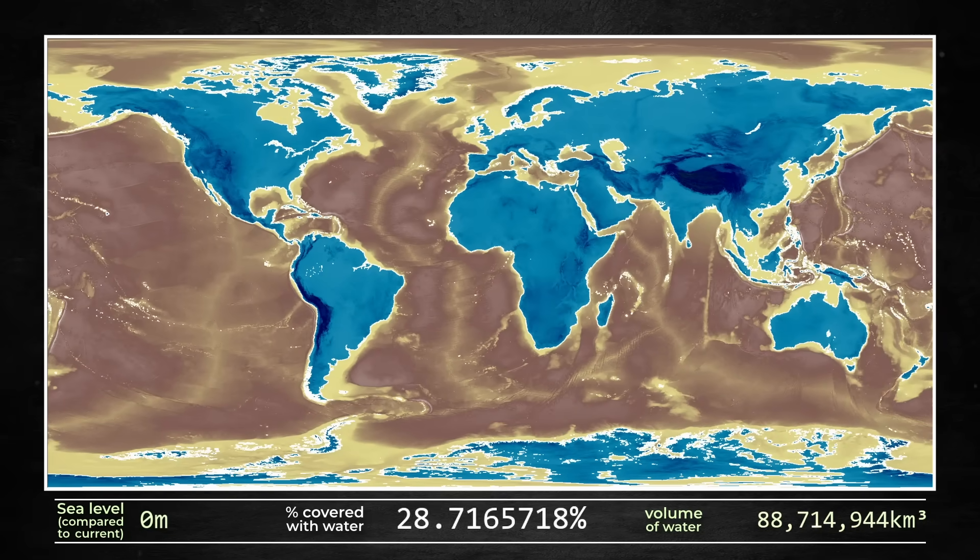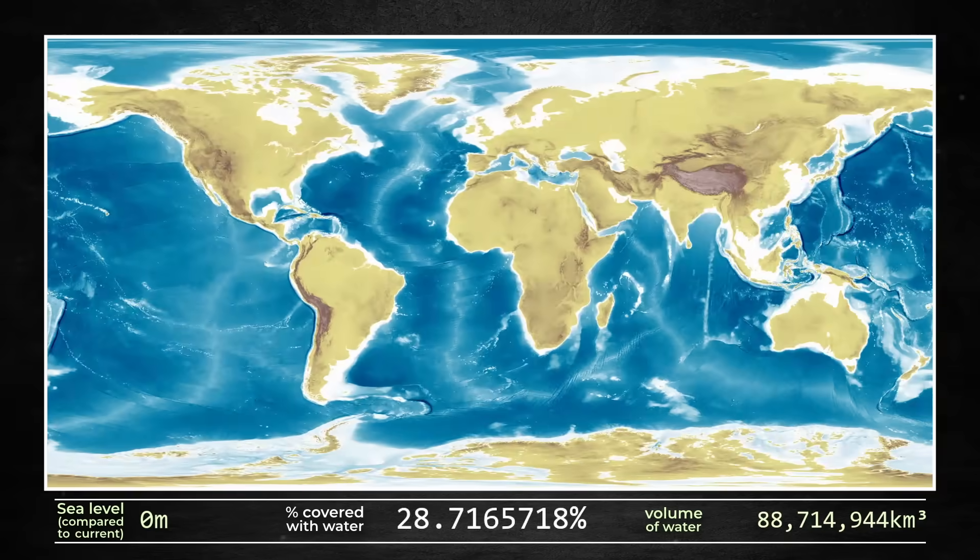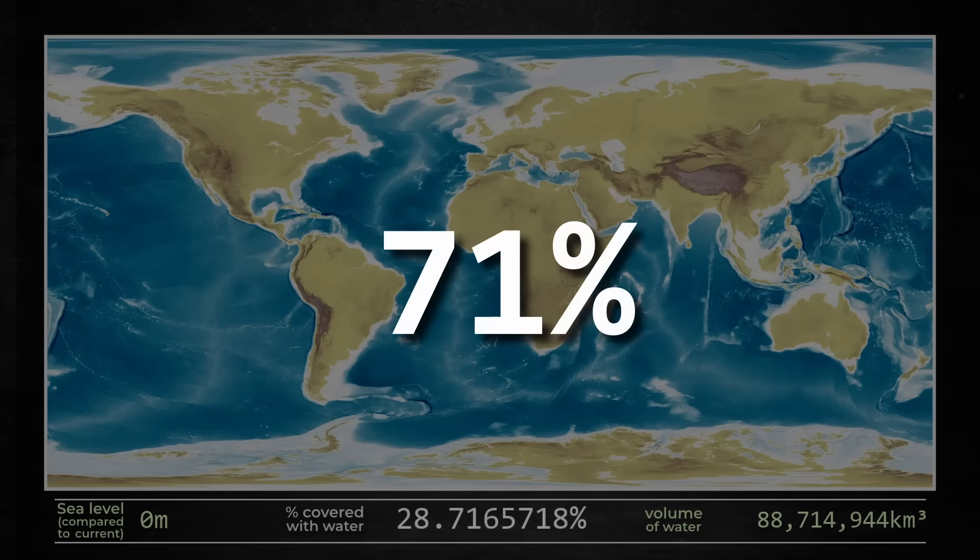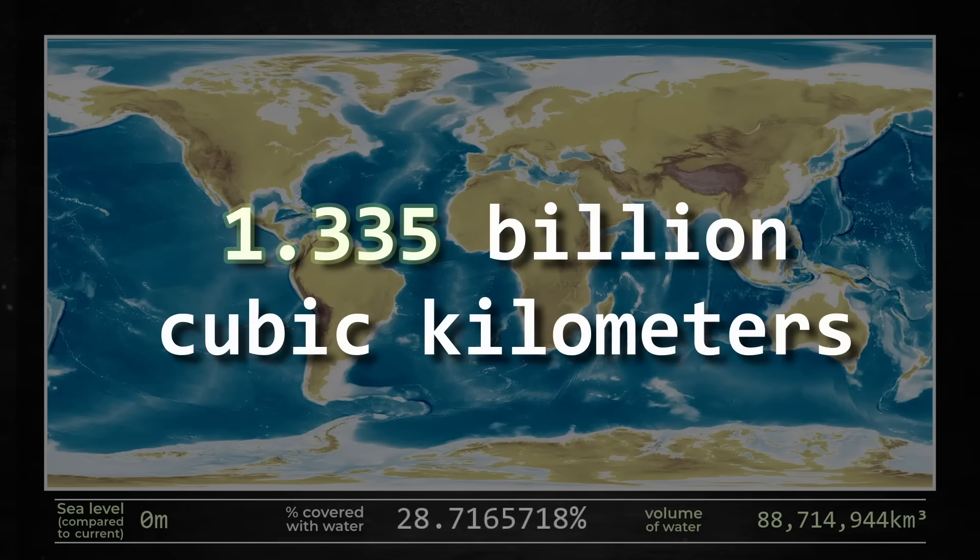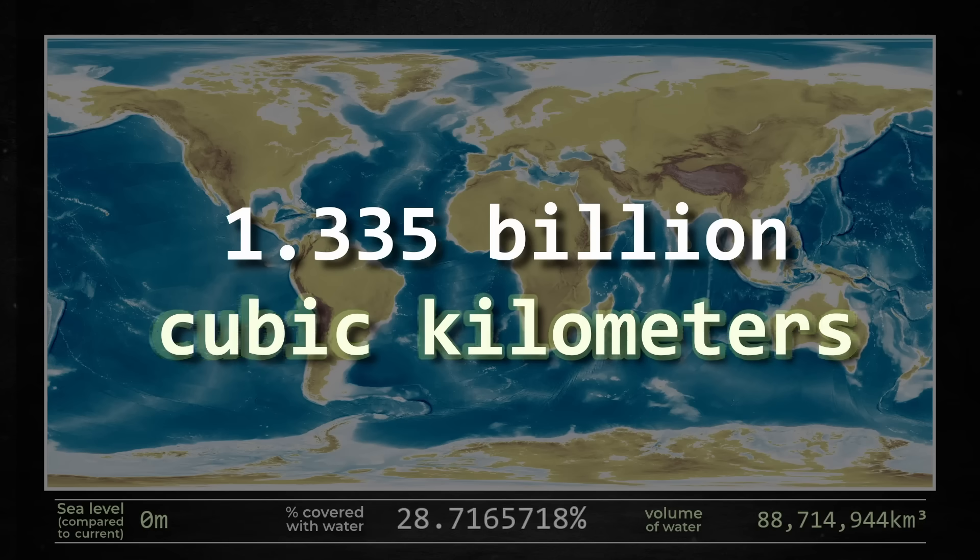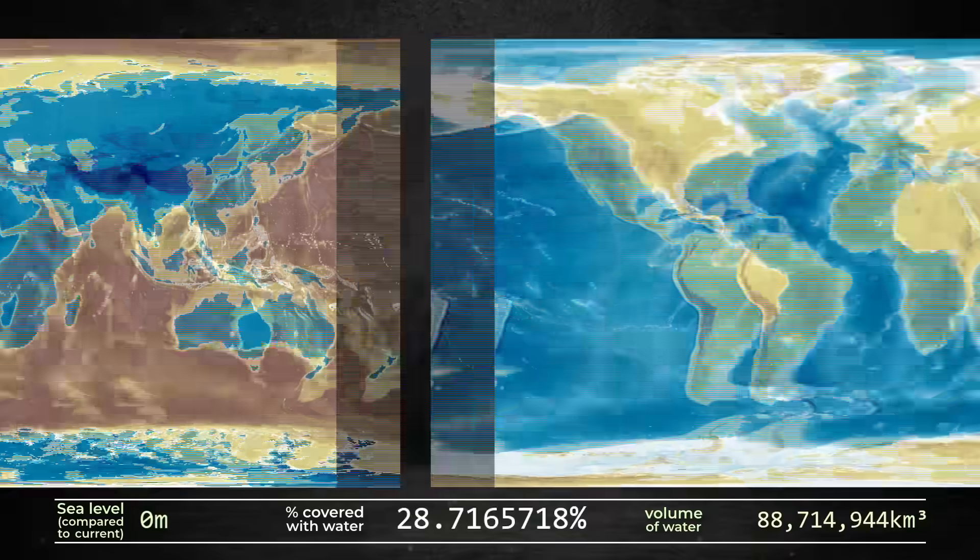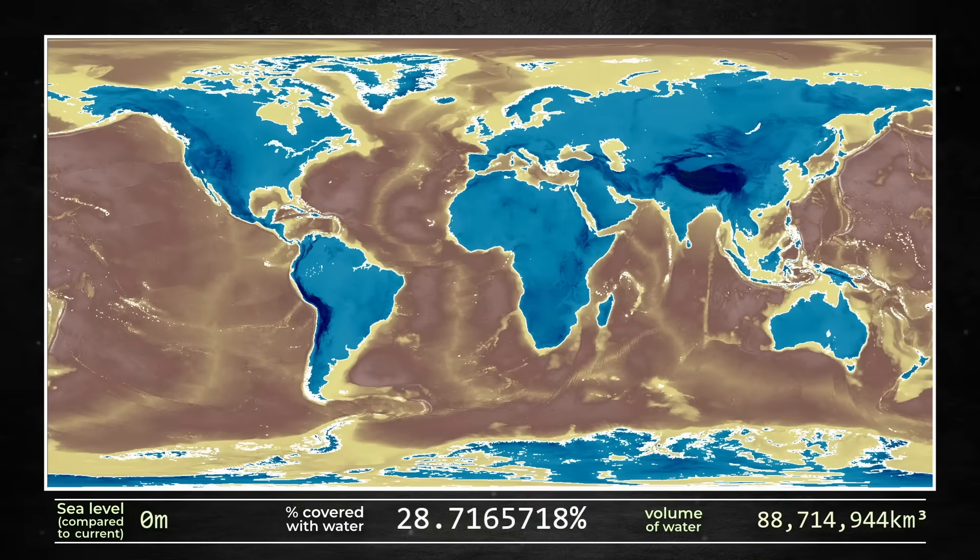But this is not what an inverted Earth would actually look like. The real Earth is covered by 71% of water containing 1.335 billion cubic kilometers of it. So we have to keep going until we get closer to those numbers.